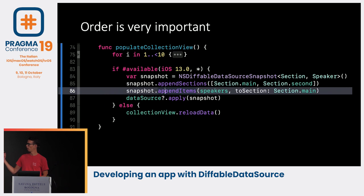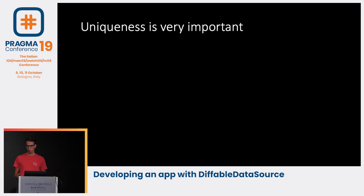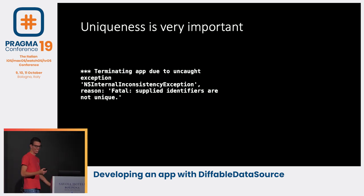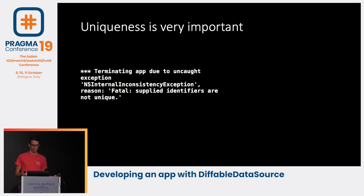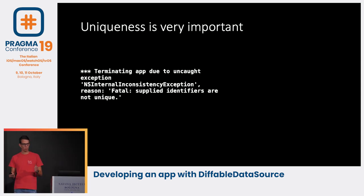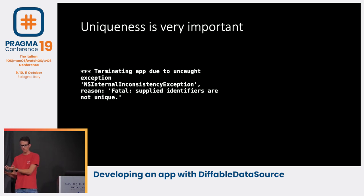Uniqueness is also very important. If we append the same section twice, it crashes — the crash message helpfully says the applied identifiers are not unique. We're giving an array of two items but Apple can only see one unique identifier, so it crashes.